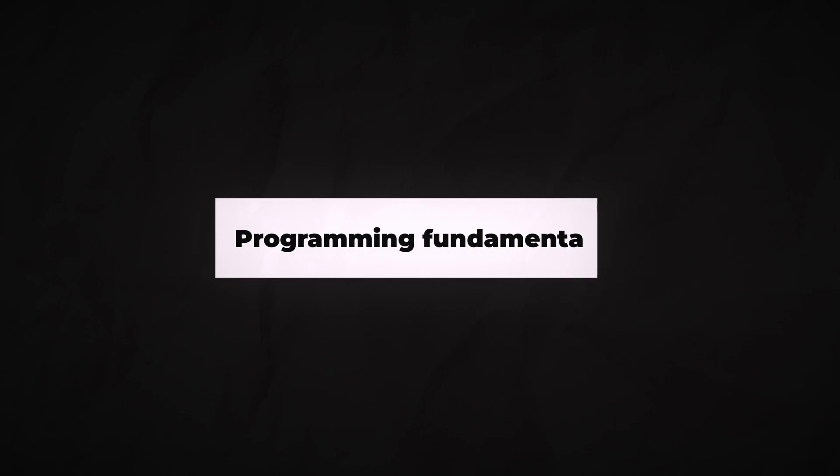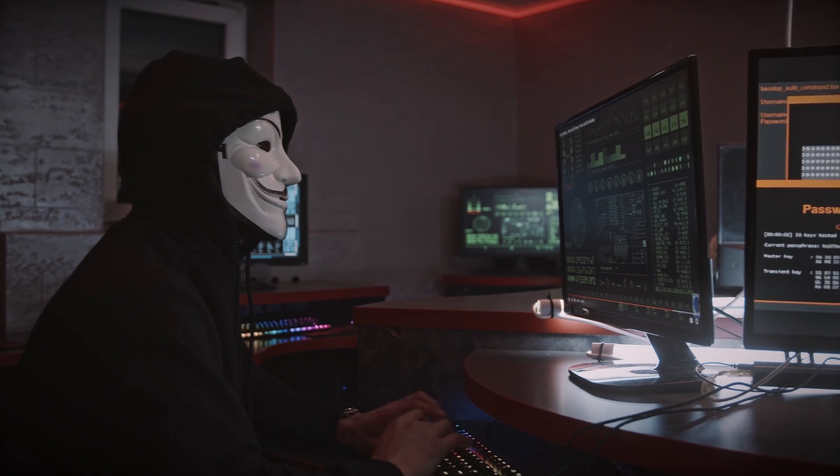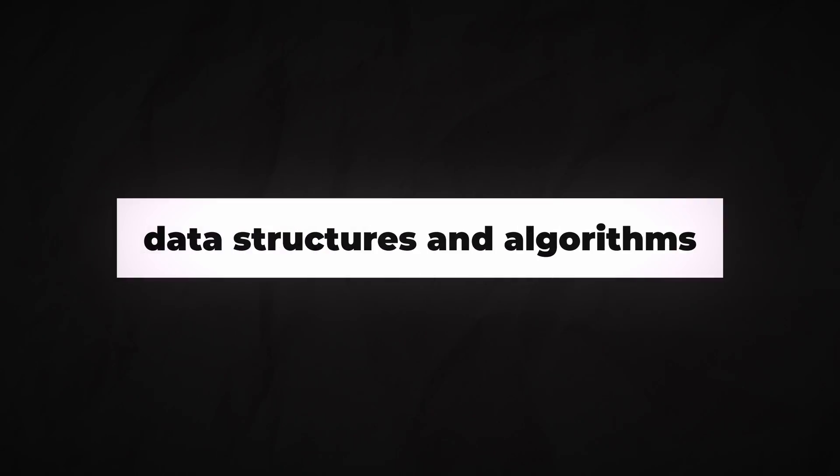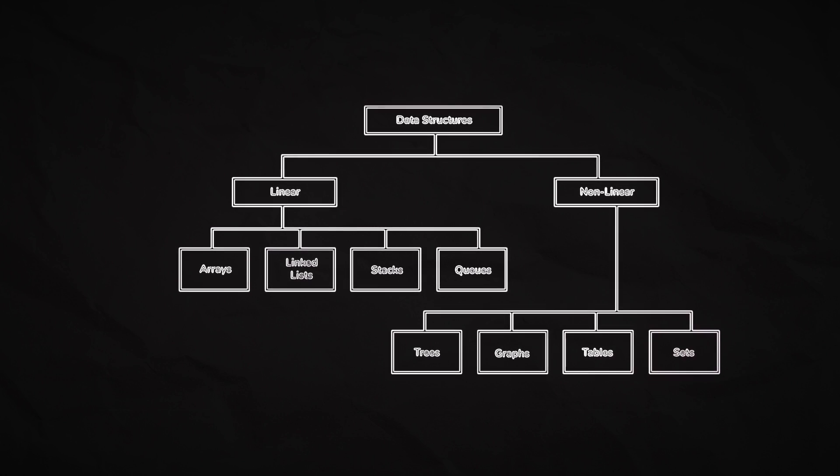First, we have the programming fundamentals. This is all about learning how to actually code, but also includes specific ways like object-oriented programming. If you want to become a programmer, you'll want to focus more on this part. A CS degree isn't all that much about programming, actually, compared to what most people think. Next, we also have data structures and algorithms. Data structures are basically ways of storing data, whereas algorithms are kind of like instructions given for the computer to execute. Both can be really simple or really complex, depending on what's necessary.